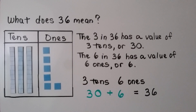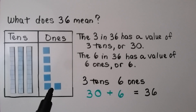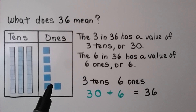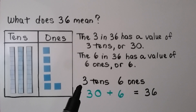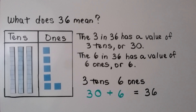What does 36 mean? The three in 36 has a value of three tens, or 30. The six in 36 has a value of six ones, or six. So it's three tens and six ones. The value of three tens is 30, the value of six ones is six, and 30 plus six equals 36.